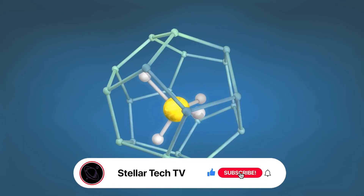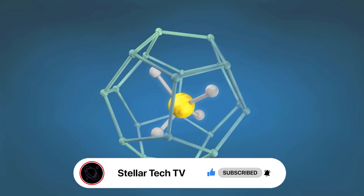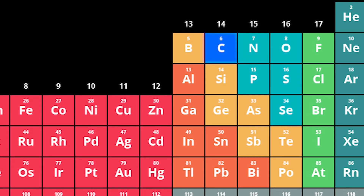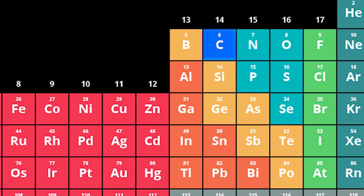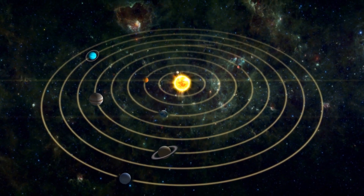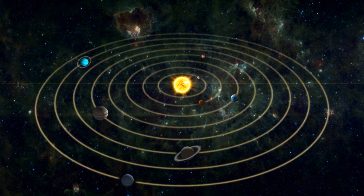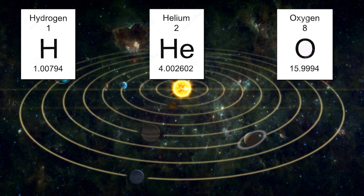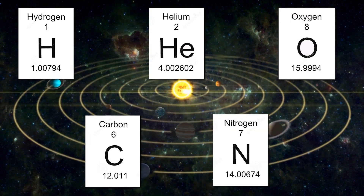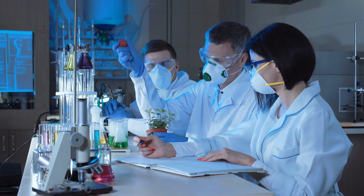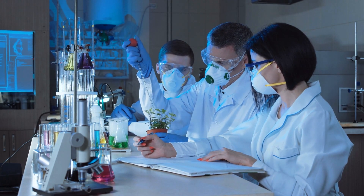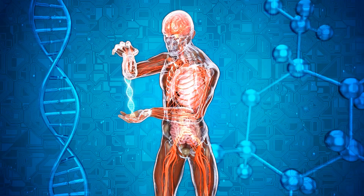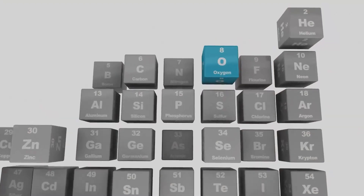The second crucial factor that contributed to carbon's selection as the basis for life is its abundance. Carbon is not only versatile, but also widely available in the universe. When we examine the top five most abundant elements in our solar system, we find that hydrogen, helium, oxygen, carbon, and nitrogen rank among the highest. Interestingly, four out of these top five elements in the solar system also happen to be among the top five elements that make up the human body.